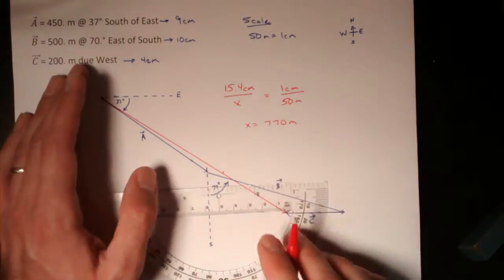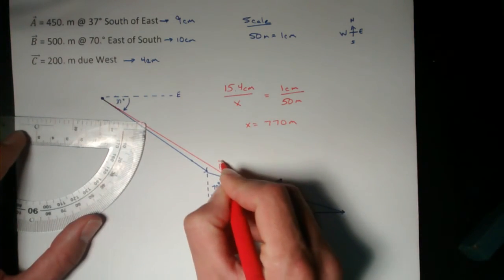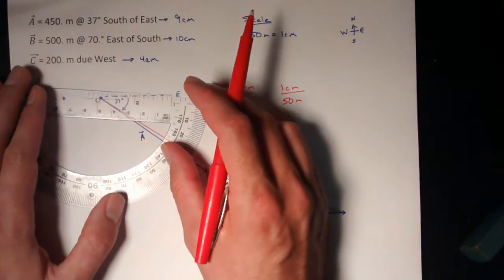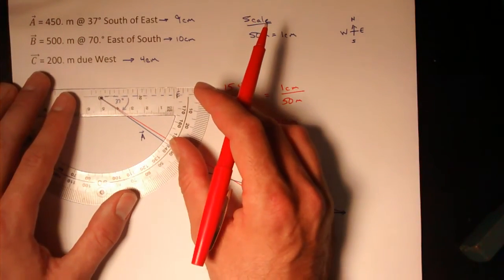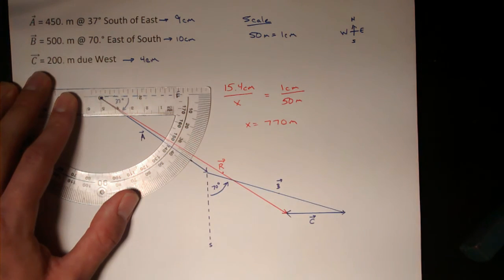The next thing I want to do is measure the angle that my resultant makes. So I see that my resultant goes south of east. I'll hold my protractor with zero degrees on east, and I'll measure how many degrees south. I see that it's about 34 degrees.